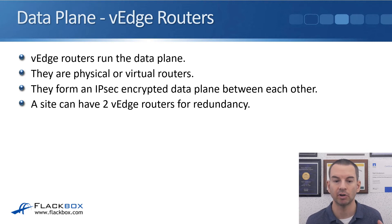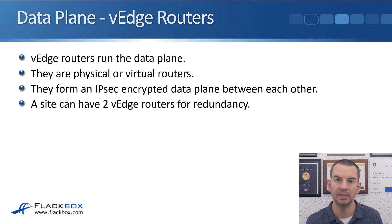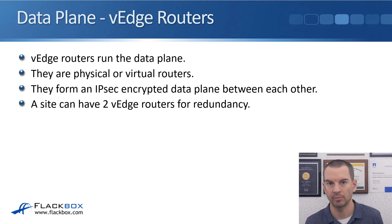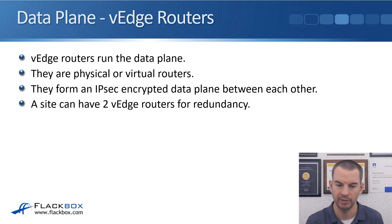The V-Edge routers run the data plane and are in charge of forwarding the actual packets. They can be physical or virtual routers, and they form an IPSec encrypted data plane between each other. Each time a new WAN site comes online, it will form VPN tunnels to your other WAN sites. A site can also have two V-Edge routers for redundancy.